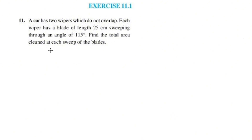Find the total area cleaned at each sweep of the blade. We have two wipers which do not overlap. One wiper has a blade length of 25 cm, sweeping through an angle of 115 degrees.